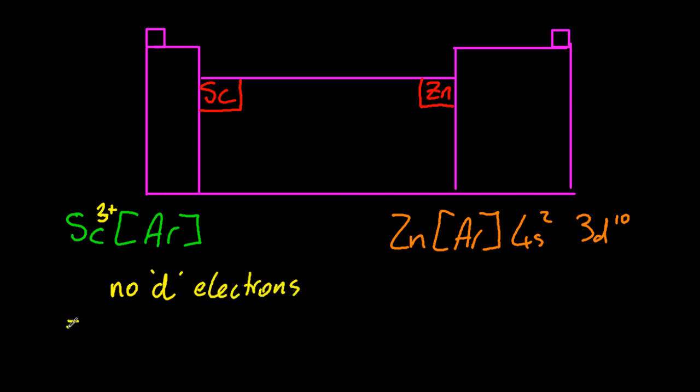Which means no coloured compounds, and there is no variable oxidation number. Scandium can only be 3+.